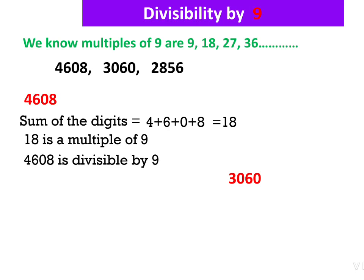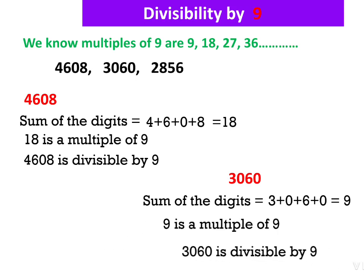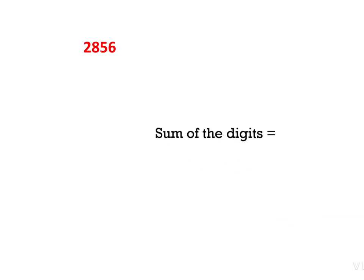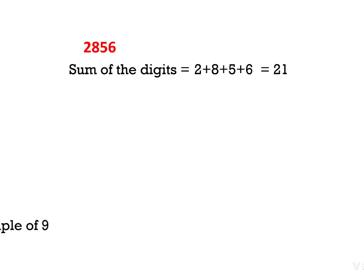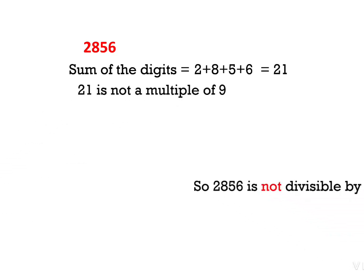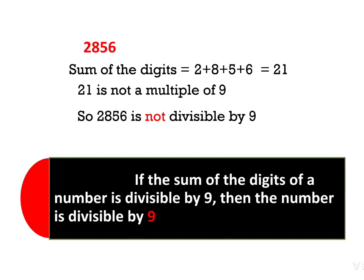Next question: 3,060. Sum of digits = 3 + 0 + 6 + 0 = 9. Since 9 is a multiple of 9, 3,060 is divisible by 9. Next: 2,856. Sum of digits = 2 + 8 + 5 + 6 = 21. Since 21 is not a multiple of 9, 2,856 is not divisible by 9. If the sum of the digits of a number is divisible by 9, then the number is divisible by 9.